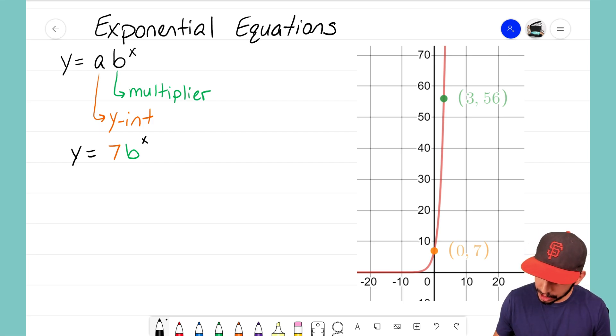Now if you notice I've already used this zero term in my equation. I use the zero term to replace the a. So what I want to do now is I actually want to use the fact that I know that the third term is 56.